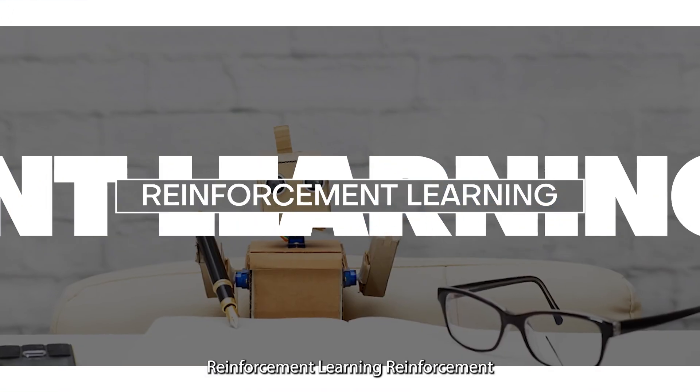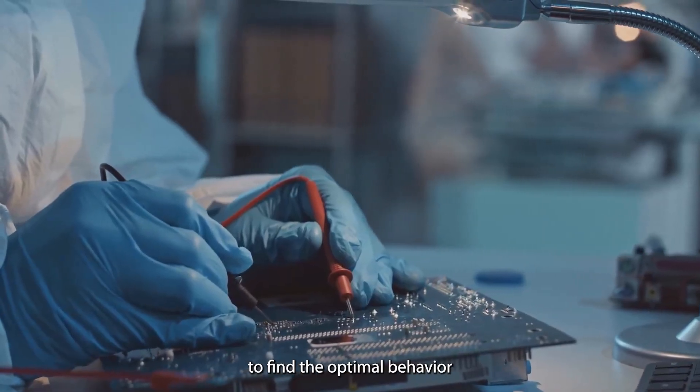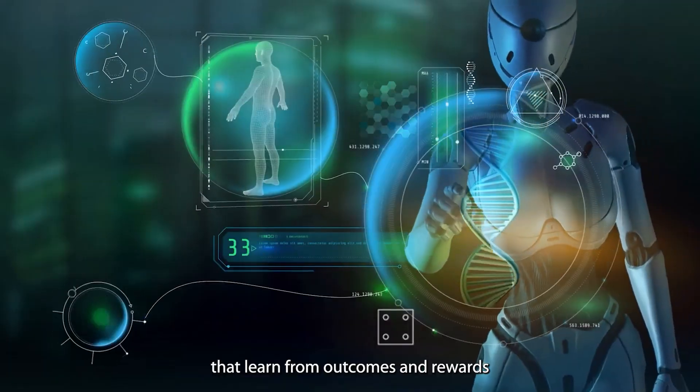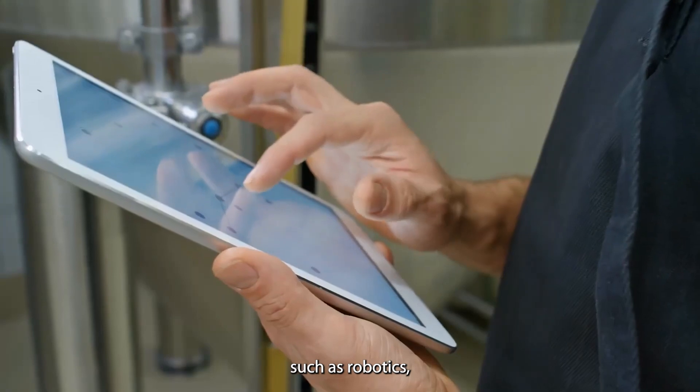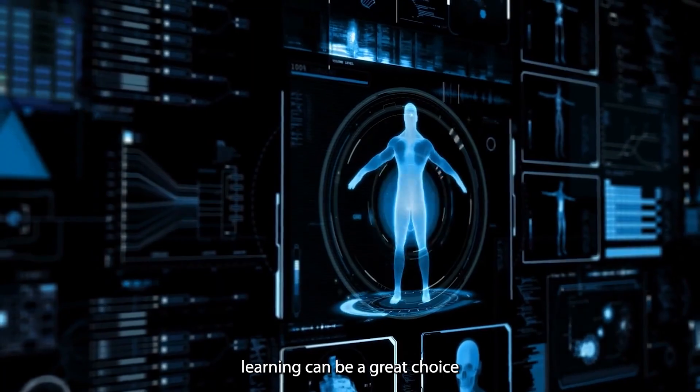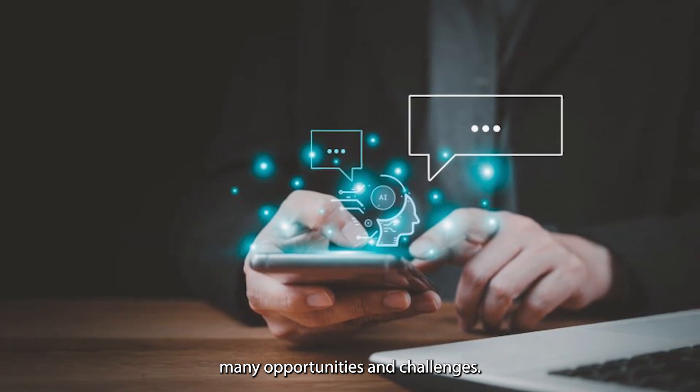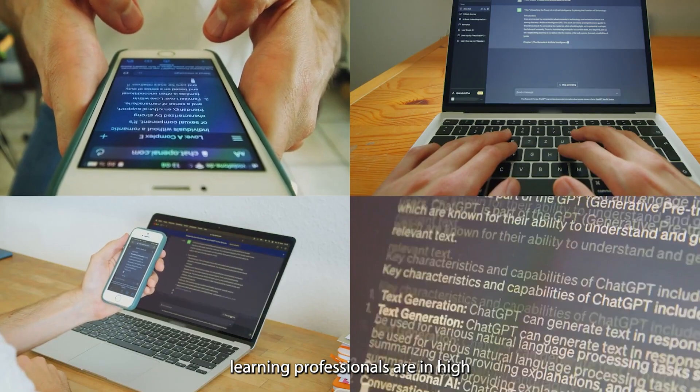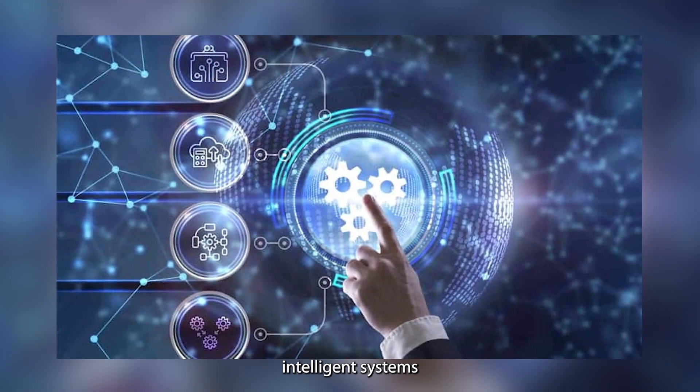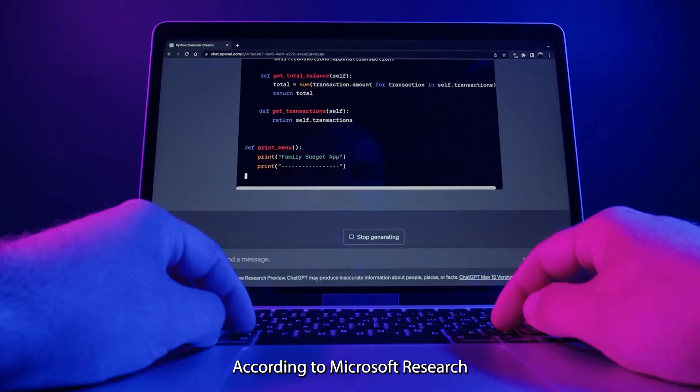Number eight, reinforcement learning. Reinforcement learning is a machine learning technique that learns by trial and error to find the optimal behavior or path in a specific situation. It uses algorithms that learn from outcomes and rewards and can be used for various applications, such as robotics, chess, and data processing. A career in reinforcement learning can be a great choice for the future, as it is a rapidly growing and evolving field that offers many opportunities and challenges. Reinforcement learning professionals are in high demand across various industries, as they can help organizations develop and deploy intelligent systems that can learn from their own experiences and adapt to changing environments.